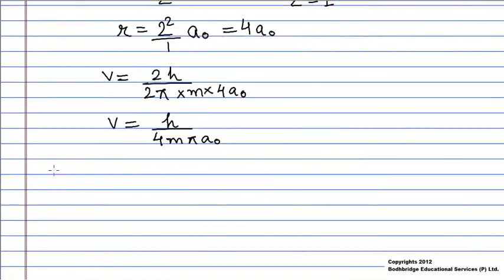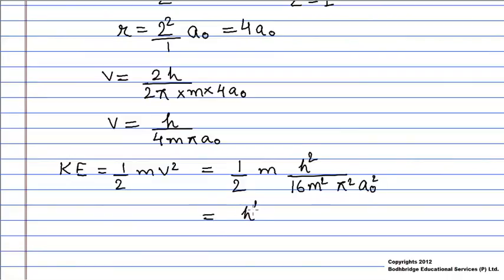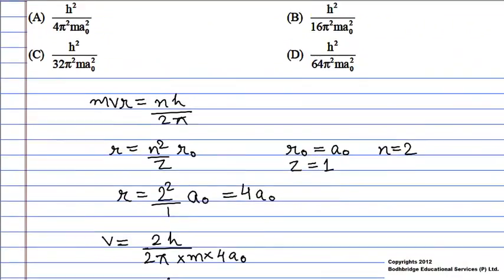We know that kinetic energy is given by KE equals ½mv². Substituting the value of v, we get KE equals ½m into h² upon 16m²π²a₀², which equals h² upon 32mπ²a₀², which matches with option C.